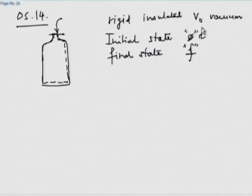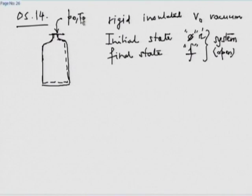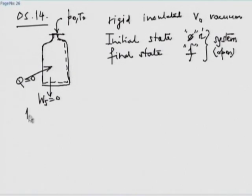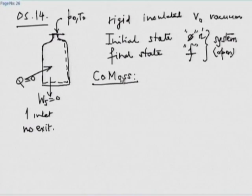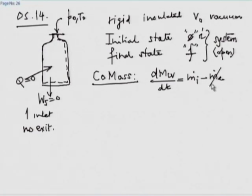The system is open and air goes in at P0, T0. As we proceed, Q equals 0, Ws equals 0, and there is one inlet and no exit. Conservation of mass: d(m_CV)/dt = m_dot_i minus m_dot_e. There is no exit, so that term just does not exist. Integrate this over the time of filling — from when the bottle is opened until flow stops.